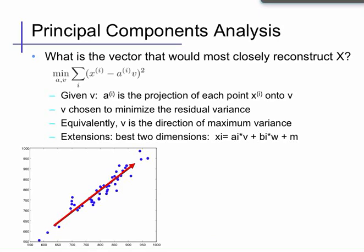So what vector v and values a can we send that will most closely approximate the data x? We measure our error between the true data point xi and the reconstructed point a times v in a least squares sense. We'd like to choose the vector of values a — one for each data point — and the vector v, that minimizes the mean squared error between the overall data points xi and the reconstructed data points a times v. If we fix v, choosing a is fairly simple: the best a is simply the projection of the point x onto the vector v. So the main problem is to choose v, and we'd like to choose v to minimize the residual variance given that we've chosen a in this optimal way.